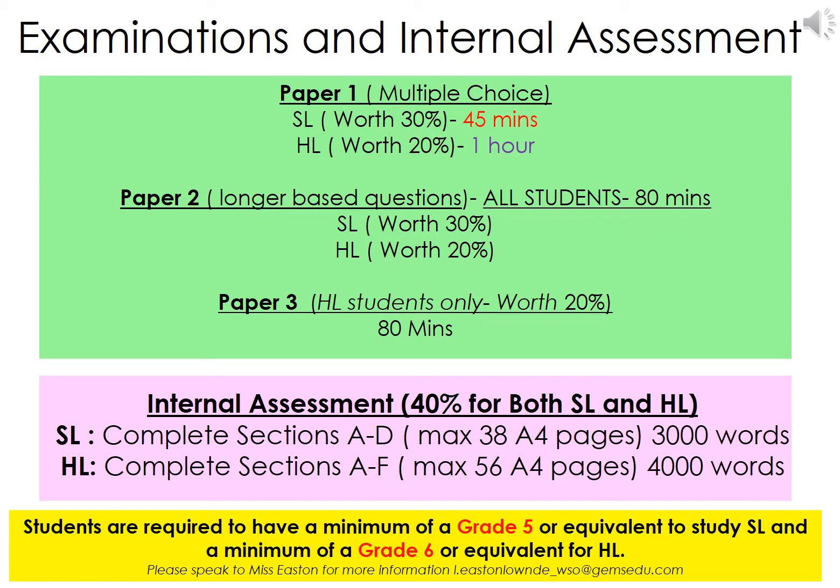Standard level students complete 4 different sections of the IA — sections A to D — with a maximum of 38 pages and 3000 words. Similarly for higher level, you complete 4 sections but with an additional 2 sections focusing on the commercial production of the product. Higher level students have more page and word allowances as well.